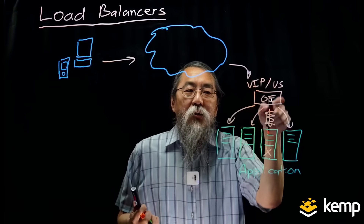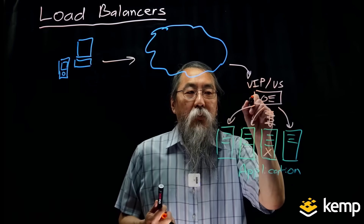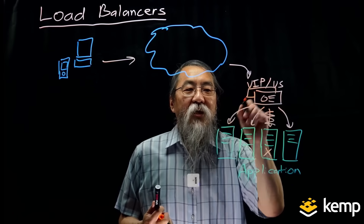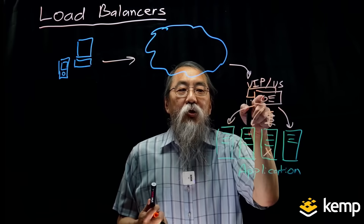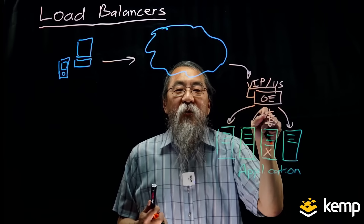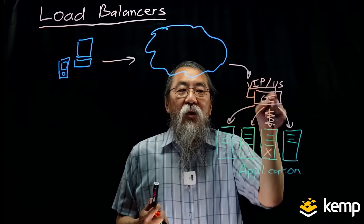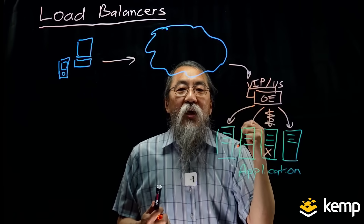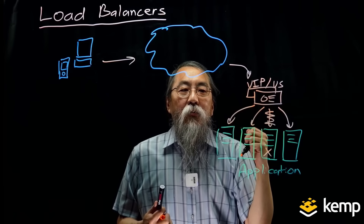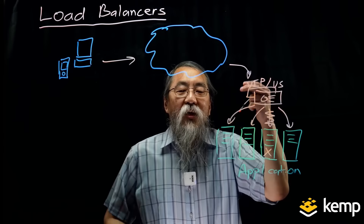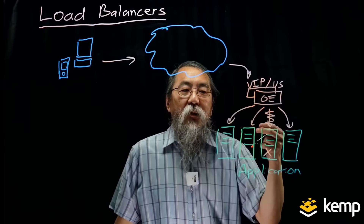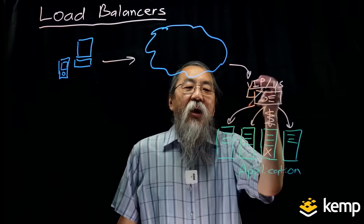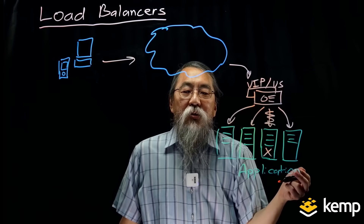The load balancer can be configured in an active/standby configuration so that if the primary load balancer fails, the backup load balancer will automatically kick in, take over that virtual IP address, and take over the connection table from the existing load balancer so that all connections will still be maintained and traffic will continue to be distributed to those servers.